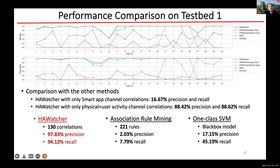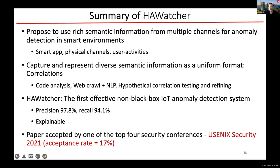We also compared it with traditional approaches like association rule mining and neural network — they didn't do well. To summarize: in this particular work, we used the rich semantic information from smart homes from multiple channels — smart apps, physical channels, and user activities — to do anomaly detection. We used various approaches to obtain the semantic information, including code analysis, web crawling, NLP, and hypothesis correlation testing and refining. We implemented the system in a real testbed and got very good results. The paper was published in a top security conference, USENIX Security 2021.